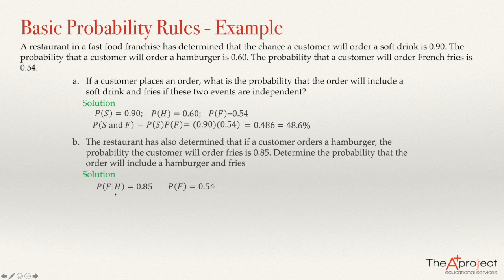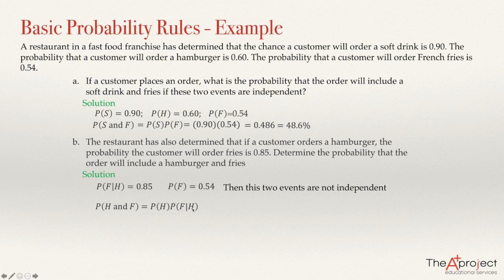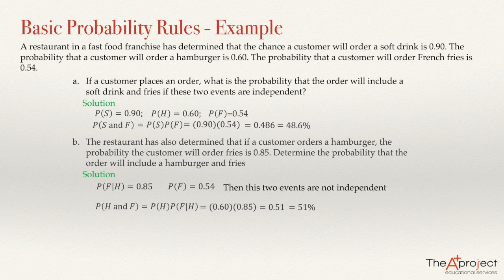The fact that the customer ordered a hamburger increased the probability of ordering fries to 0.85, so these two events are not independent. To find P(H and F), we use P(H) times P(F|H), which is 0.60 times 0.85, equals 0.51 or 51%. This answers the second question.